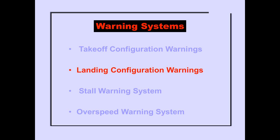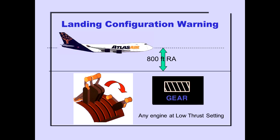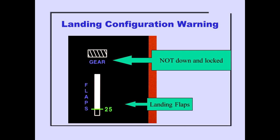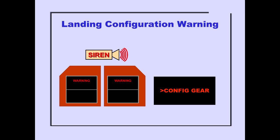The landing configuration warning system alerts the crew that the landing gear is not down for landing. Two conditions activate the warning. The first condition is radio altitude less than 800 feet with any engine at a low thrust setting and the gear not down. The second condition is any time that landing flaps are selected with the gear not down. The landing configuration warning consists of activation of the warning siren, illumination of the master warning lights, and the ICAS warning message Configuration Gear.